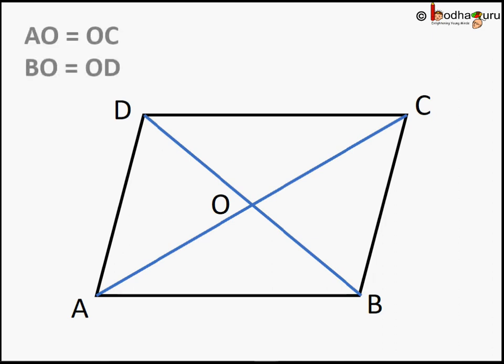This means AO is equal to OC and BO is equal to OD. We are given that the diagonals bisect each other.